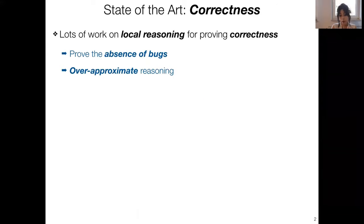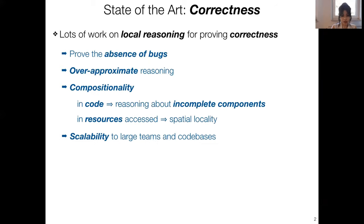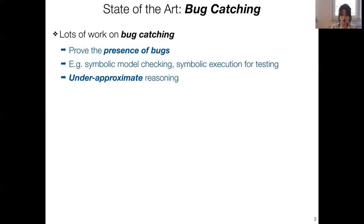Thanks to advances in local reasoning such as separation logic, we've managed to make correctness techniques compositional — both in code, meaning we can apply them to incomplete small fragments, and in the resources they access, giving us spatial locality. On the other hand, bug-catching techniques try to prove the presence of bugs using under-approximate reasoning, focusing on a smaller subset of program behaviors. If that smaller subset has a bug, then the larger set of possible behaviors also has those bugs.